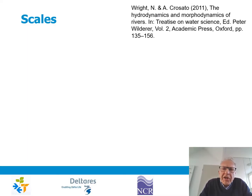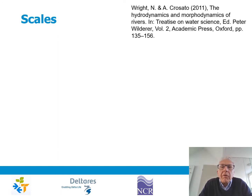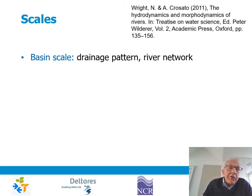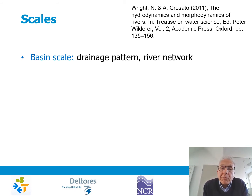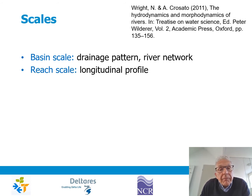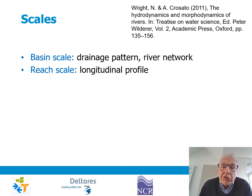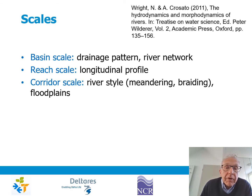There are different shapes and features in morphology that depend on the scale. A good framework for studying this is the one proposed by Wright and Crosato in 2011. At the larger scale, they distinguish the basin scale, which deals with the drainage pattern and river network of the full catchment. Then zooming in, we arrive at a reach scale, which deals with the development of the longitudinal profile of a river.